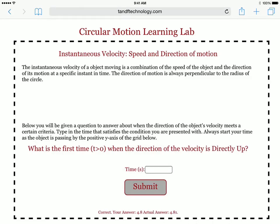The direction of motion is always at a right angle to the radius of the circle. So what we're going to do here is it wants to know what is the first time when time is greater than zero when the direction of the velocity is directly up.